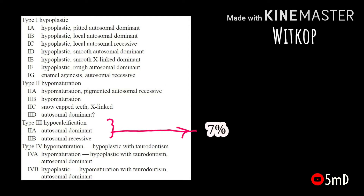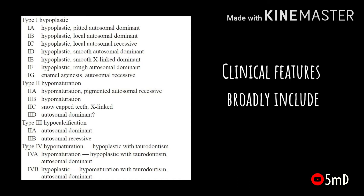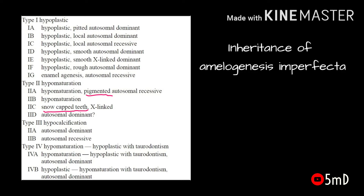When seen broadly, the clinical features can include the tooth having a pitted appearance, localized dysplasia, or either a smooth or rough appearance. There could also be pigmented or snow-capped teeth appearance. The inheritance of AI is also complicated — it could be either autosomal dominant, autosomal recessive, X-linked dominant, or X-linked recessive.